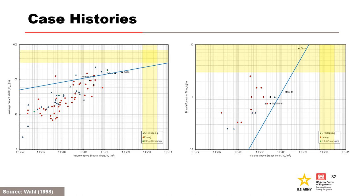Plots of average breach width and breach formation time as a function of volume above breach invert were generated from the DSO-98-004 database. The trend line is drawn through Helho, Oros, and Teton dams for reference. USACE estimated breach parameters for Mosul Dam in Iraq as part of a risk assessment. Mosul Dam is a very large rock fill dam, and the range of parameter estimates are highlighted in yellow. These plots illustrate that large rock fill dams will be in the upper right corner of the database of all dam failures, highlighting again the difficulty in using case studies and comparative analysis.